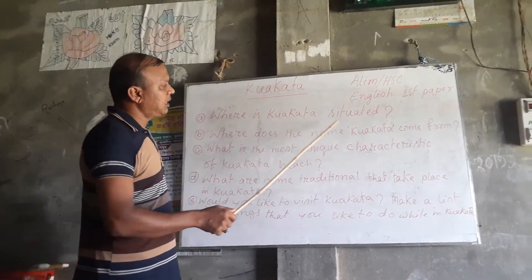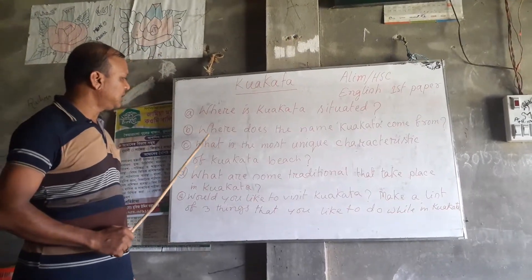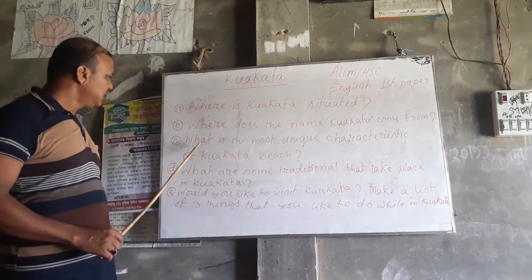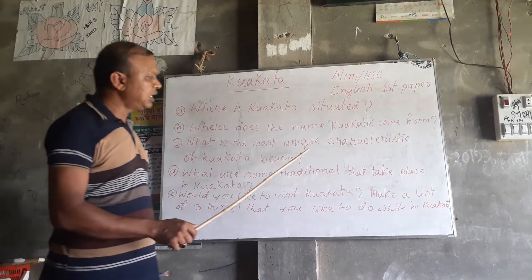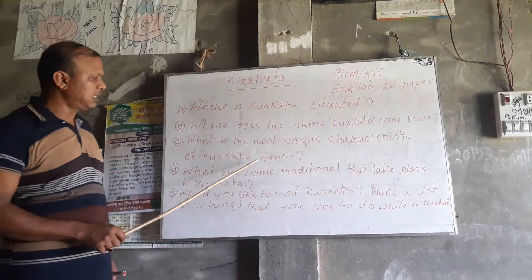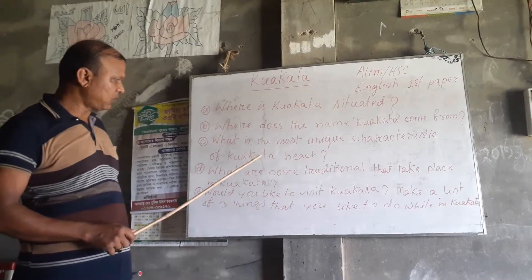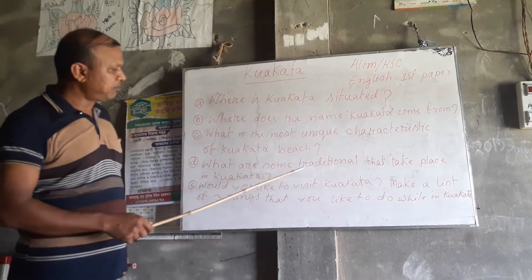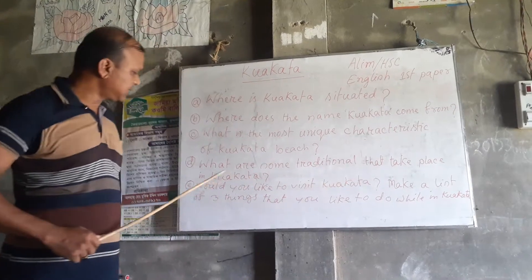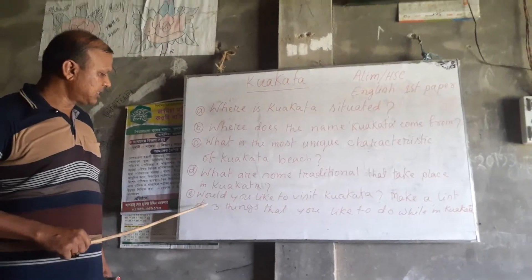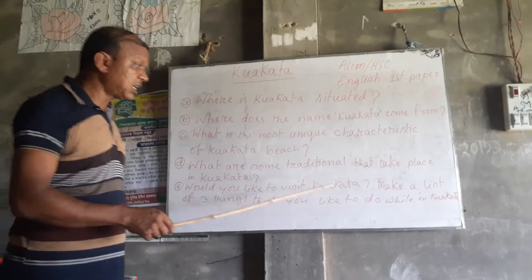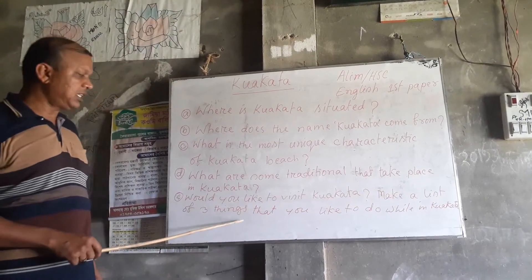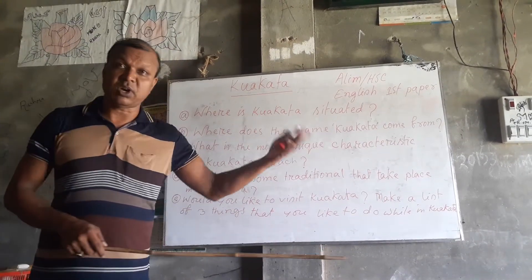The first question is: Where is Kuwakata situated? The second question is: Where does the name Kuwakata come from? The third question is: What is the most unique characteristic of Kuwakata Beach? The fourth question is: What are some traditional characteristics in Kuwakata? And the last question is: Would you like to visit Kuwakata?